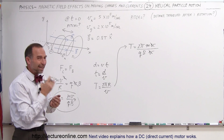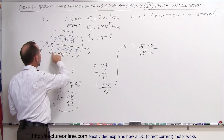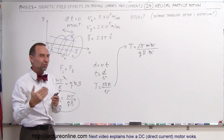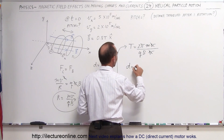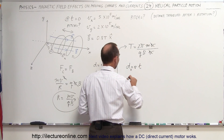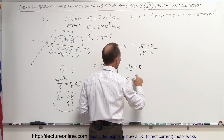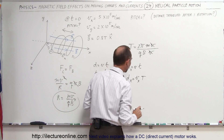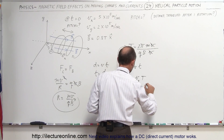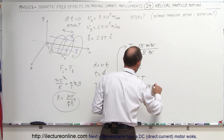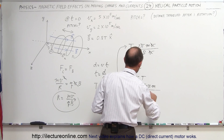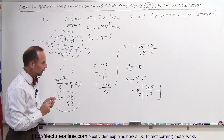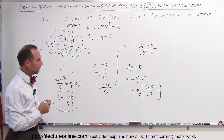That's the same period it takes for the proton to make one full rotation. Now we can figure out the distance traveled in the x direction. Distance equals velocity times time, so the distance in the x direction equals the x-direction velocity times the period. This gives us: pitch = vₓ × (2πm / qB). That tells us the pitch — the distance traveled in the x direction when the proton makes one complete revolution in the magnetic field.